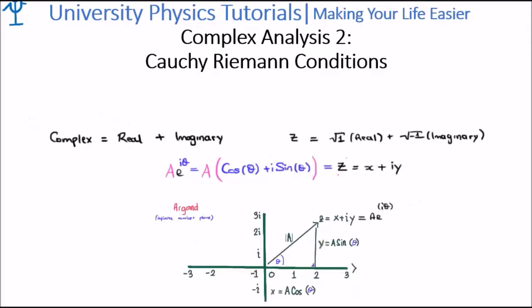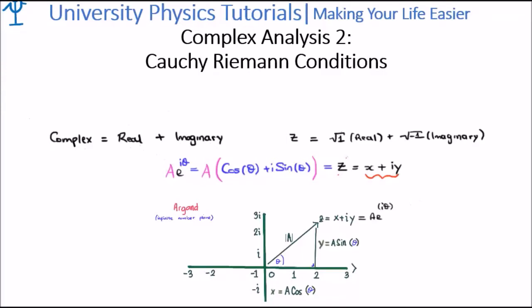Firstly, I'd like to do a quick recap. We know that a complex number has two components: a real component and an imaginary component. We know the building block for the real number line is the square root of plus one, while the building block for the imaginary number line is the square root of minus one. We can represent an arbitrary complex number as z, expressed in rectangular coordinates as x plus iota times y, or in polar coordinates using Euler's equation. This is a 2D complex number, so it can be represented on an Argand diagram or the infinite complex plane.